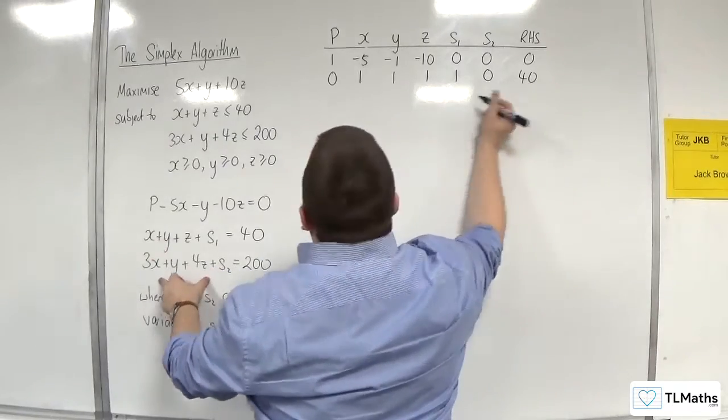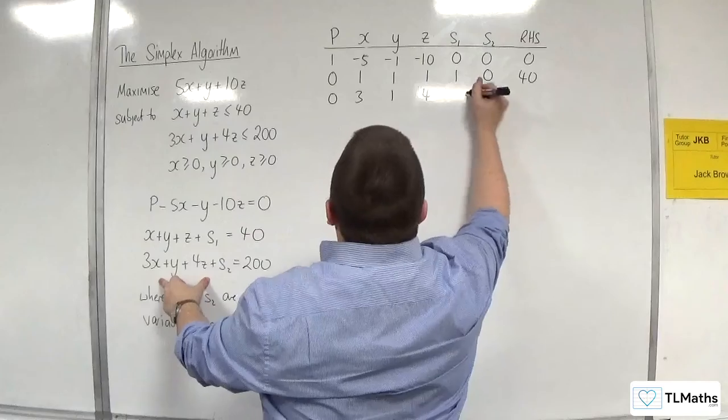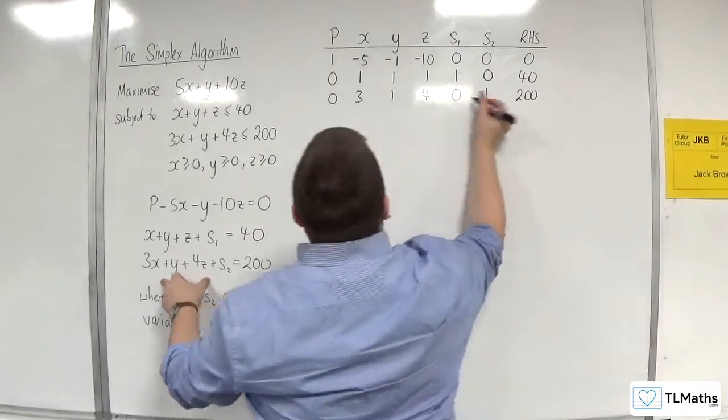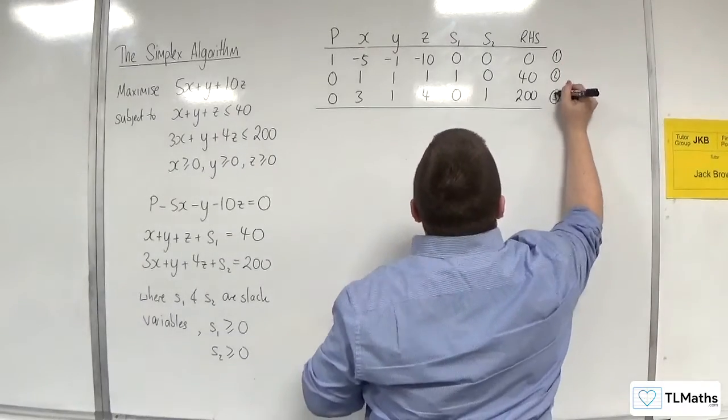And here we're going to have 0, 3, 1, 4, 0, 1, 200. So let's call this equation 1, 2, and 3.